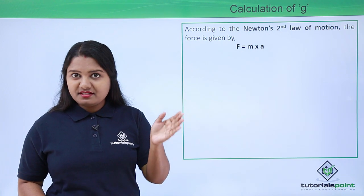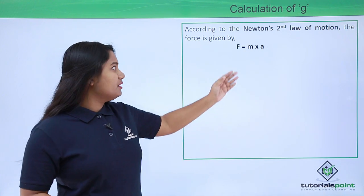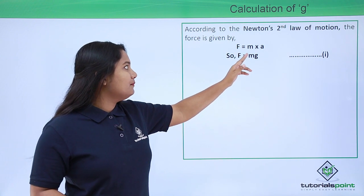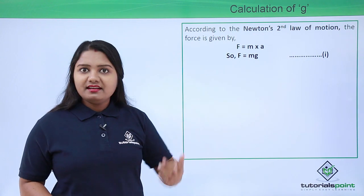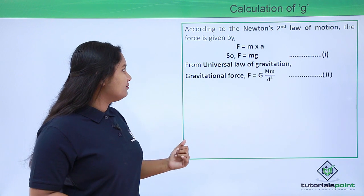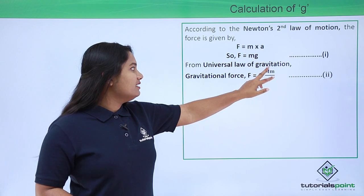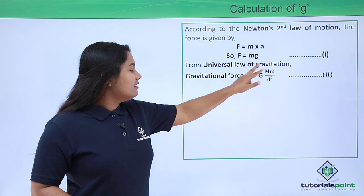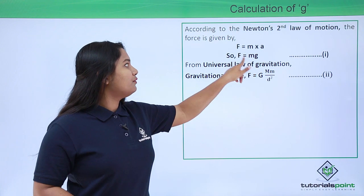Since the acceleration here is solely due to gravity, we replace A with g, giving us F equals mg. From the universal law of gravitation, we have the expression for gravitational force as F equals GMm divided by d squared.